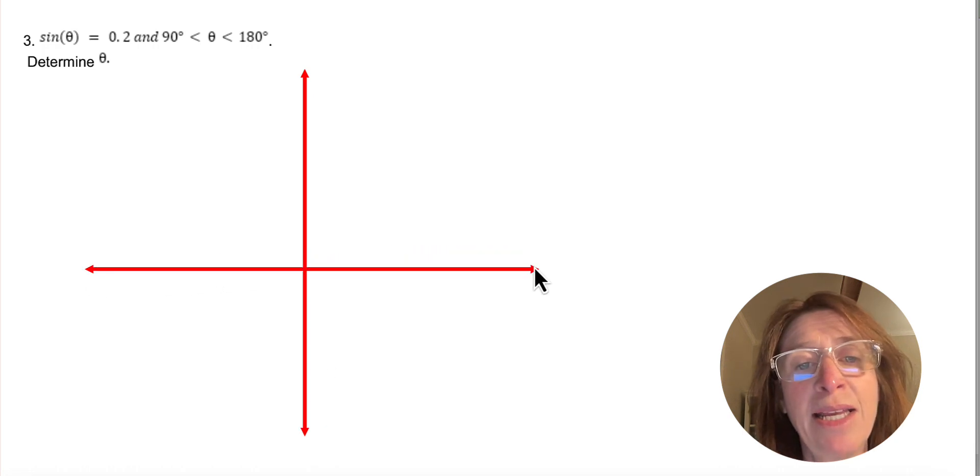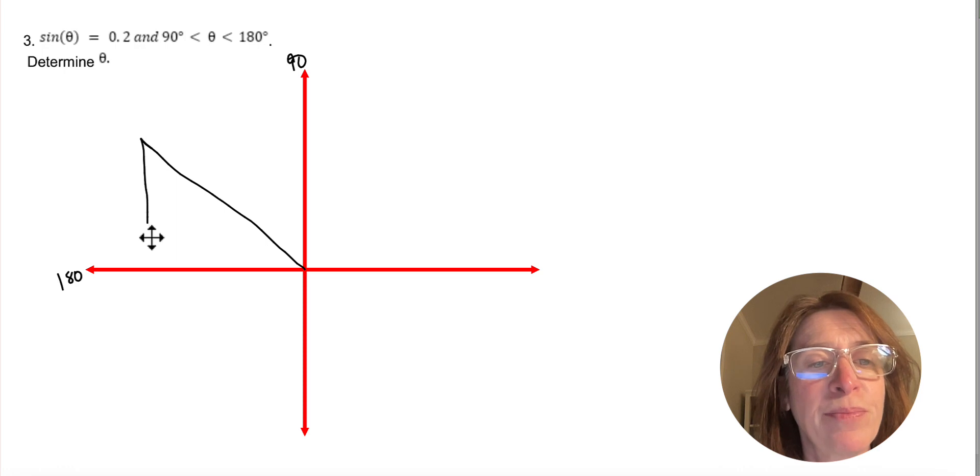So theta is between 90 and 180, so I'm actually in quadrant 2 again, right? Because here's 180 and here's 90. So I go ahead and draw my triangle and I put in my theta.